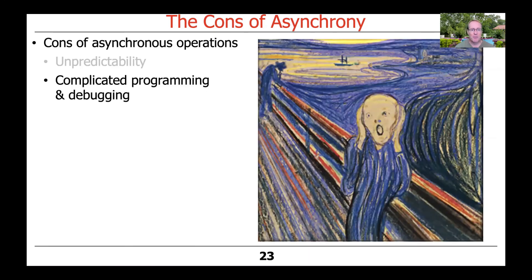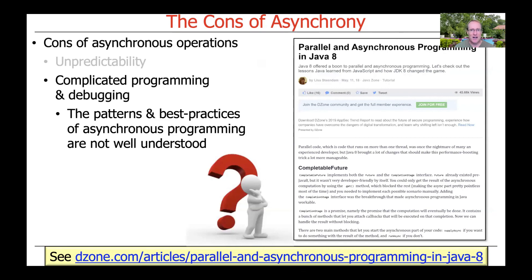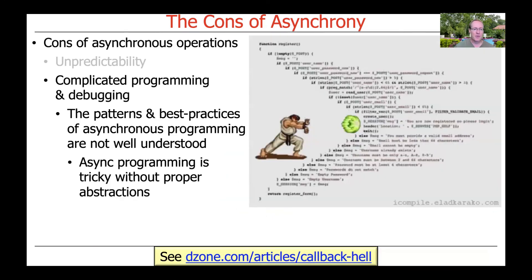Another issue that makes asynchrony more complicated is that programming and debugging may be harder. The most obvious reason is that most developers haven't developed a nice intuitive feeling for the patterns and best practices of asynchronous programming. It takes a while to get your head around this because things don't occur in the same order and take different amounts of time to run. When you debug your program, you'll find it performs differently than when you don't debug it, because you're changing the order in which things run. This is really one reason why completable futures are so cool.